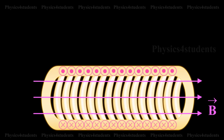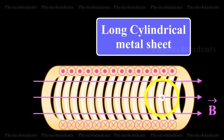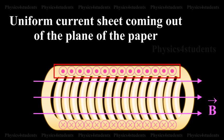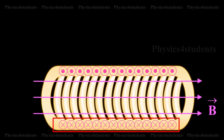A long solenoid appears like a long cylindrical metal sheet. The upper view of dots is like a uniform current sheet coming out of the plane of the paper. The lower row of crosses is like a uniform current sheet going into the plane of the paper.